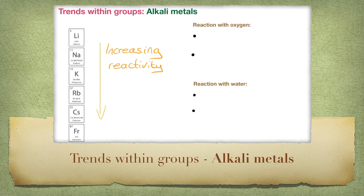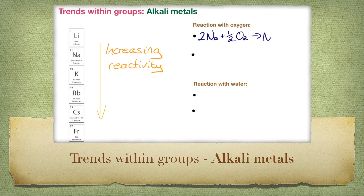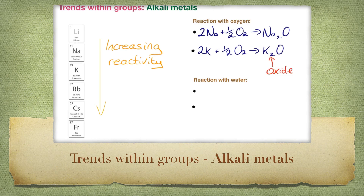Alkaline metals are all very reactive because they have very low first ionization values. They only need to lose one electron to become stable. Alkaline metals do not exist freely in nature because of this reactivity, and any alkaline metals in the lab are stored under oil. Reactivity increases going down a group as the atomic radius gets larger and the screening effect causes first ionization energy values to decrease. All alkaline metals react with oxygen to form an oxide — for example, sodium plus oxygen gives sodium oxide, and potassium plus oxygen gives potassium oxide.